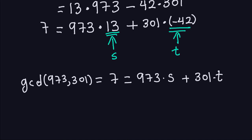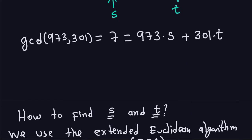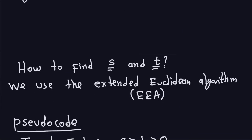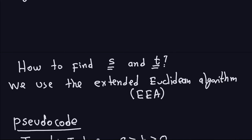That's the way we do it by hand. The best way to do it if you have large numbers is to let the computer do it for you. So what I'm going to show you now is an algorithm or pseudocode that is going to compute both things: the greatest common divisor and the coefficients S and T. That's called the extended Euclidean algorithm — the one we did by hand, but now in pseudocode.